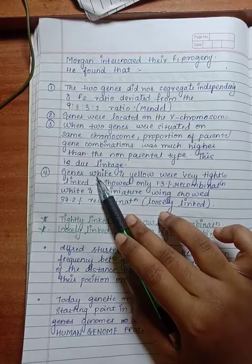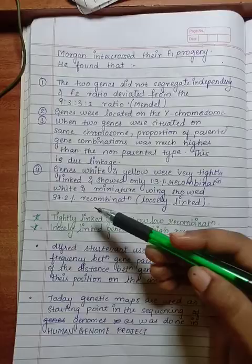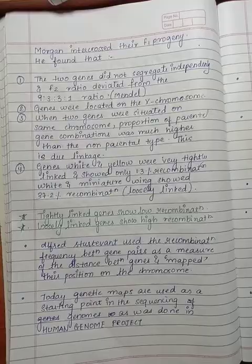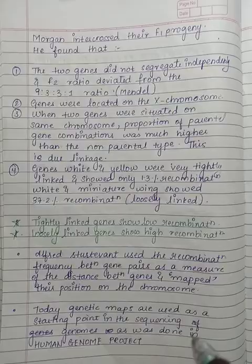Genes white and yellow are very tightly linked, show only 1.3% recombination. White and miniature wings show 37.2% recombination, loosely linked. Tightly linked genes show low recombination and loosely linked genes show high recombination.